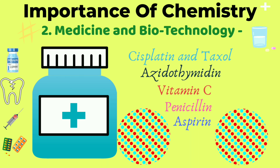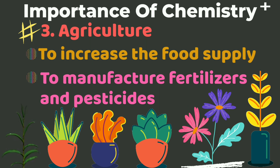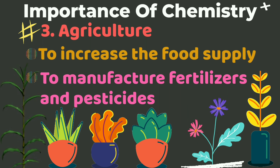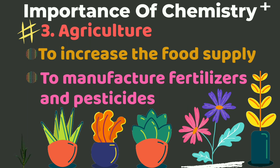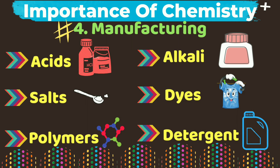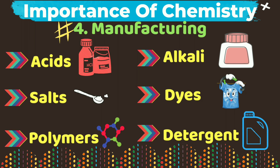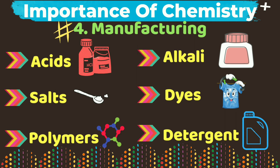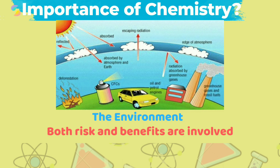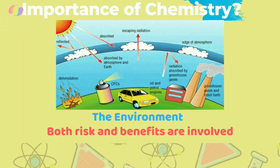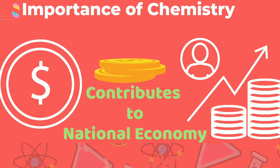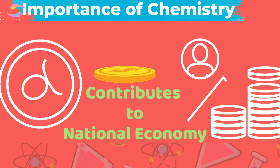In the field of agriculture, to increase food supply and productivity, there is huge usage of chemistry in the manufacturing of fertilizers and insecticides. Chemistry is also useful in the manufacturing of alkalis, acids, salts, dyes, polymers, and detergents. In the environment, chemistry is used in both harmful and beneficial cases. It contributes in a big way to the national economy, so the importance of chemistry has a very wide range in the world.